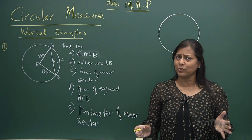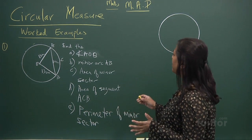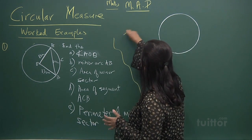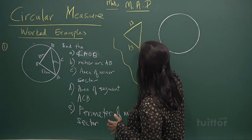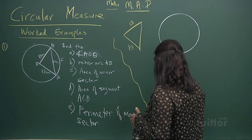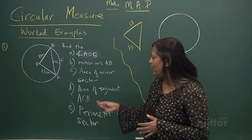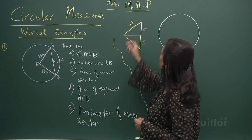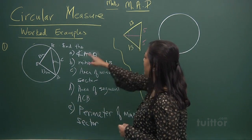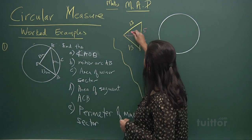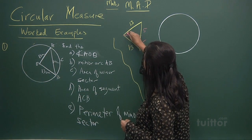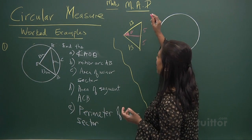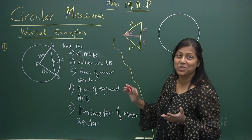You know this is a trigonometry problem, so let's read it together. We have this triangle with sides 13, 13, and 10 — it's an isosceles triangle. When you cut it in half, the 10 becomes 5 and 5. They want to find angle AOB, so let's first find this half-angle. I'll call it theta.